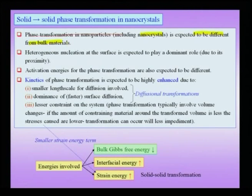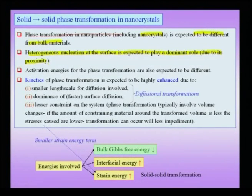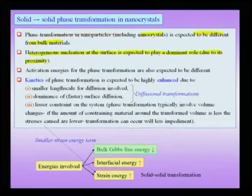Heterogeneous nucleation at the surface is expected to play a dominant role in nano crystals due to its proximity. In a solid-to-solid phase transformation, heterogeneous nucleation is the dominant form because you cannot avoid defects such as grain boundaries, stacking faults, dislocations, and enriched regions of vacancies. In the case of nanoparticles, the surface is a defect very close to the bulk of the material, and therefore the surface is expected to play an important role in heterogeneous nucleation leading to phase transformation in nano crystals. Additionally, activation energies for phase transformation are expected to be different from the bulk.